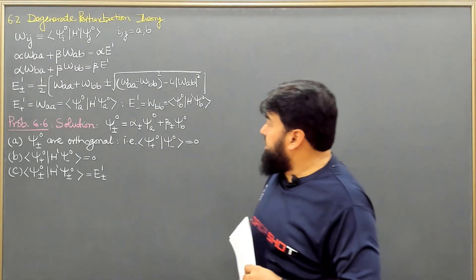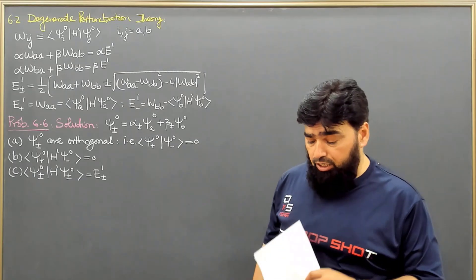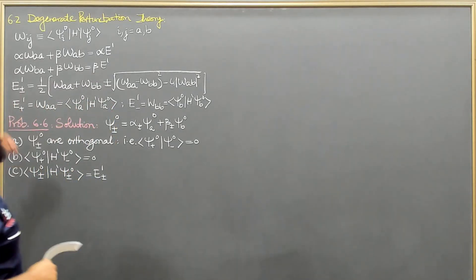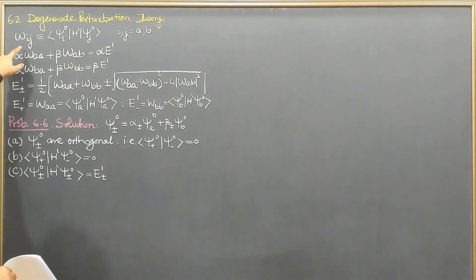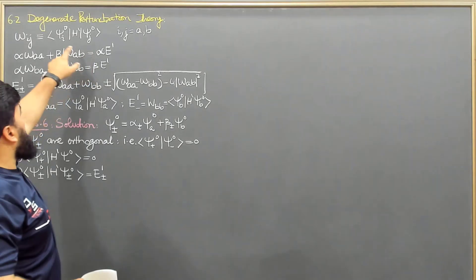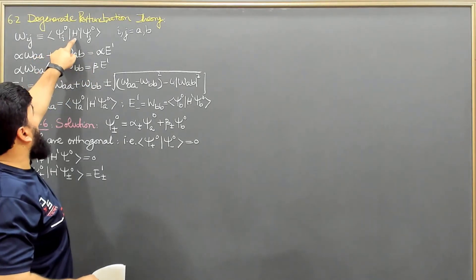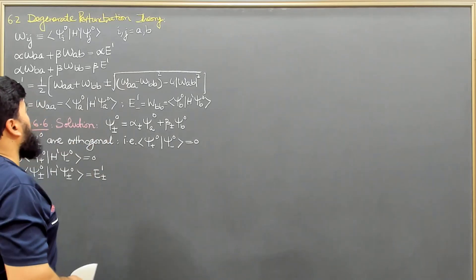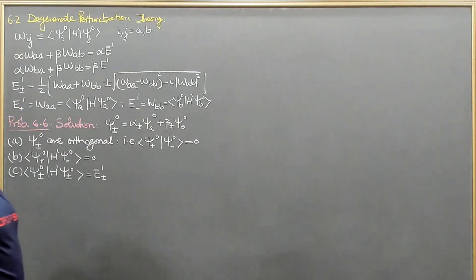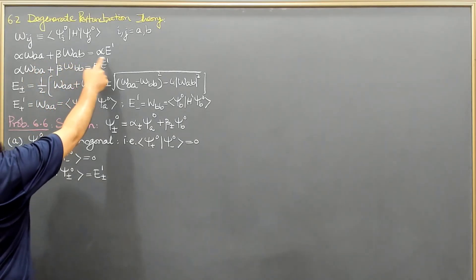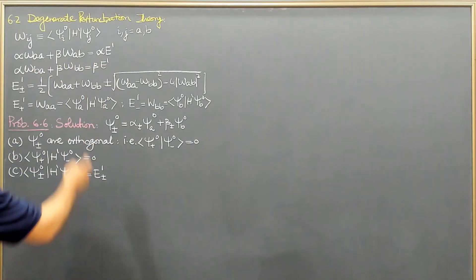Having already completed degenerate perturbation theory for a two-fold degeneracy, we recall the key results. We got the matrix elements W_ij — for example W_AA, W_AB, W_BA, W_BB — which equal the inner product with the perturbation H'. From this we obtained two familiar equations: α·W_AA + β·W_BA = α·E1, and a second analogous equation.